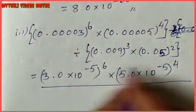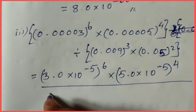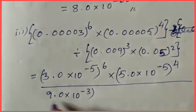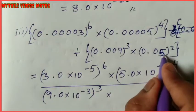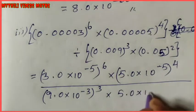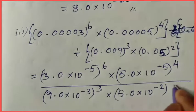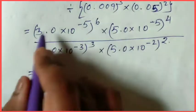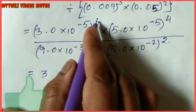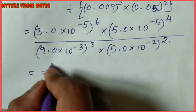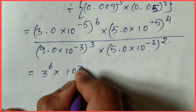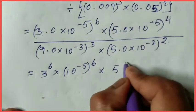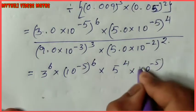The denominator: 0.009 = 9.0 × 10 power minus 3, and 0.05 = 5.0 × 10 power minus 2. So rewriting: numerator is (3.0 × 10^-4)^6 × (5.0 × 10^-4)^4, divided by (9.0 × 10^-3)^3 × (5.0 × 10^-2)^2.